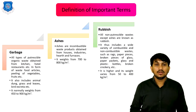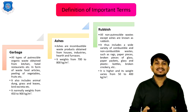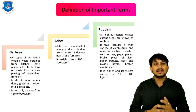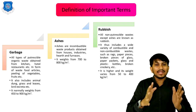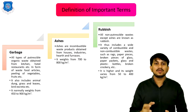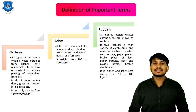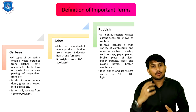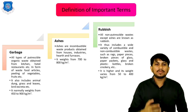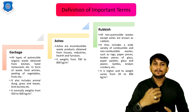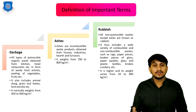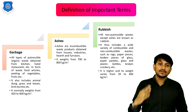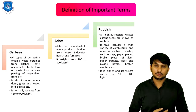Next is Rubbish material. All non-perishable wastes except ashes are known as rubbish. It includes a wide variety of combustible and non-combustible wastes such as rags, paper pieces, broken pieces of glass, paper packets, glass and plastic bottles, broken crockery, etc. It has high weight, varying from 50 to 400 kg per cubic meter.